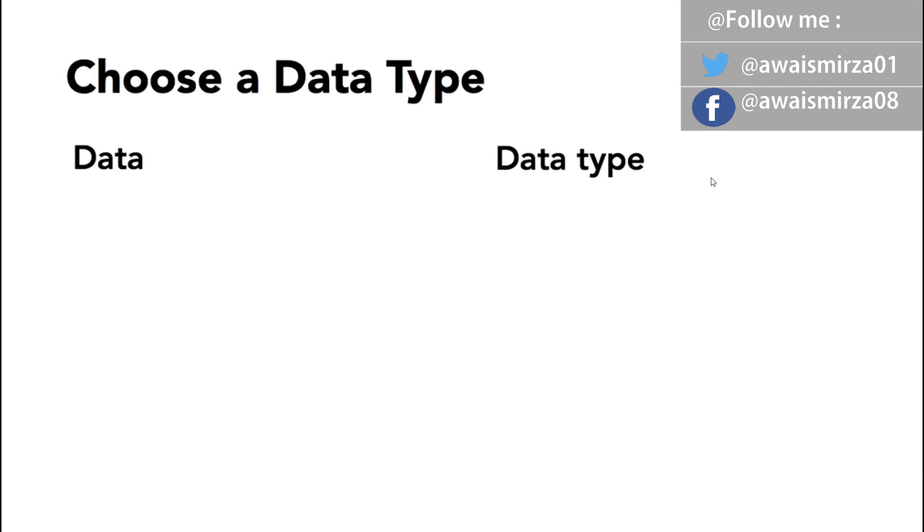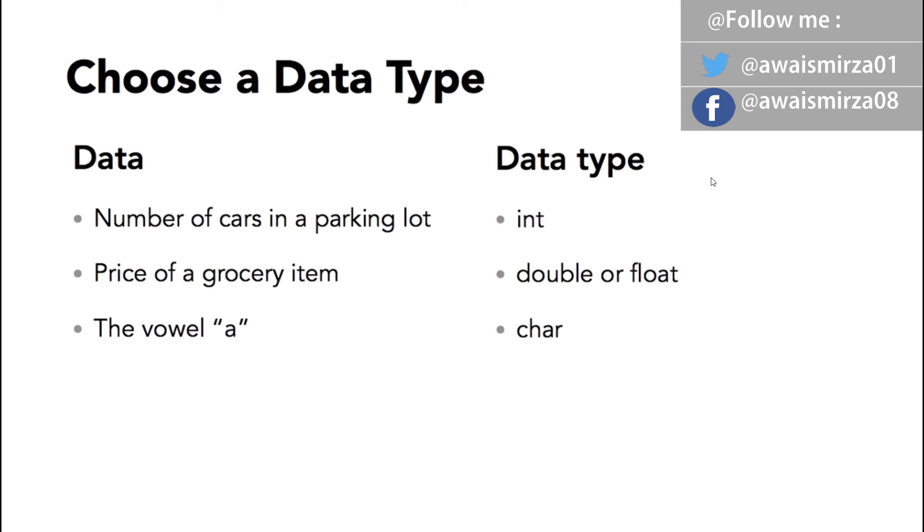Let's think about a few more examples. I will give you an example and you tell me the correct data type. How about the number of cars in a parking lot? If you said int, you are correct. Now, how about the price of a grocery item? This should be double or float, since it contains a decimal point.